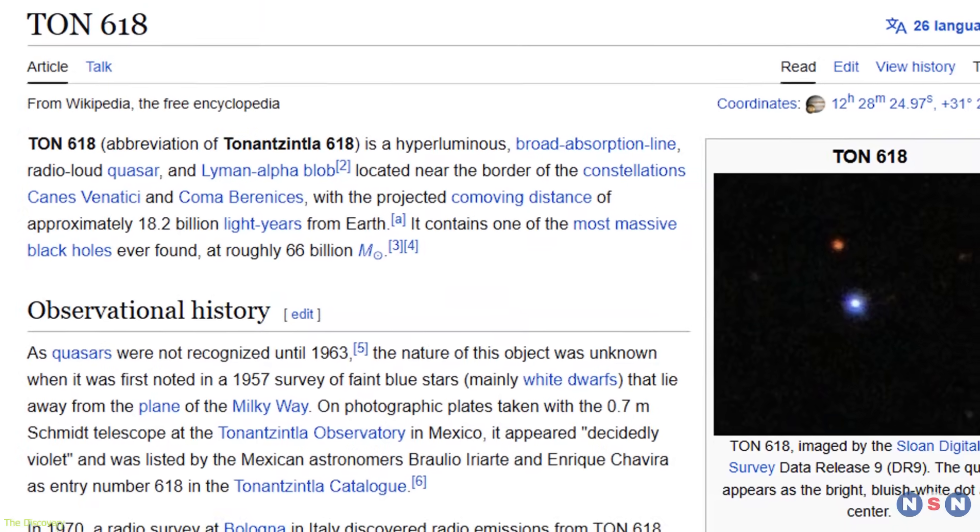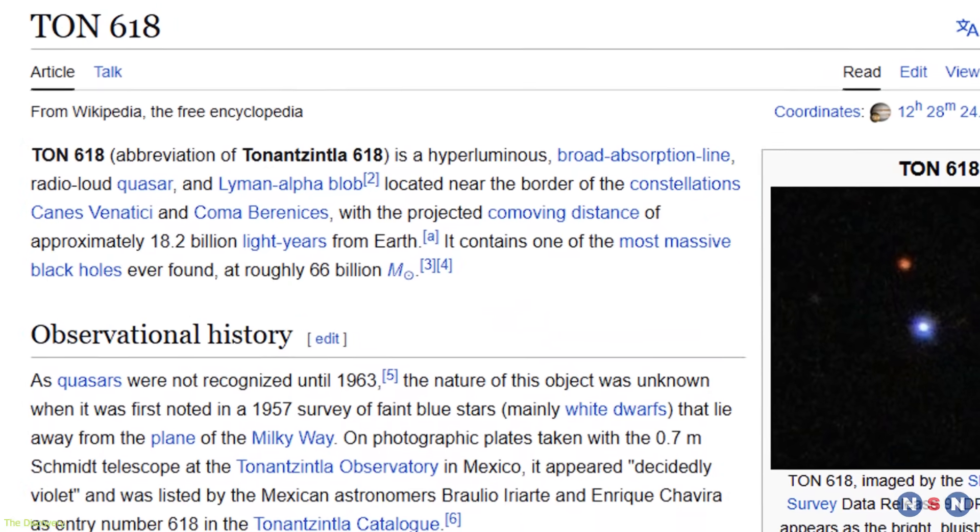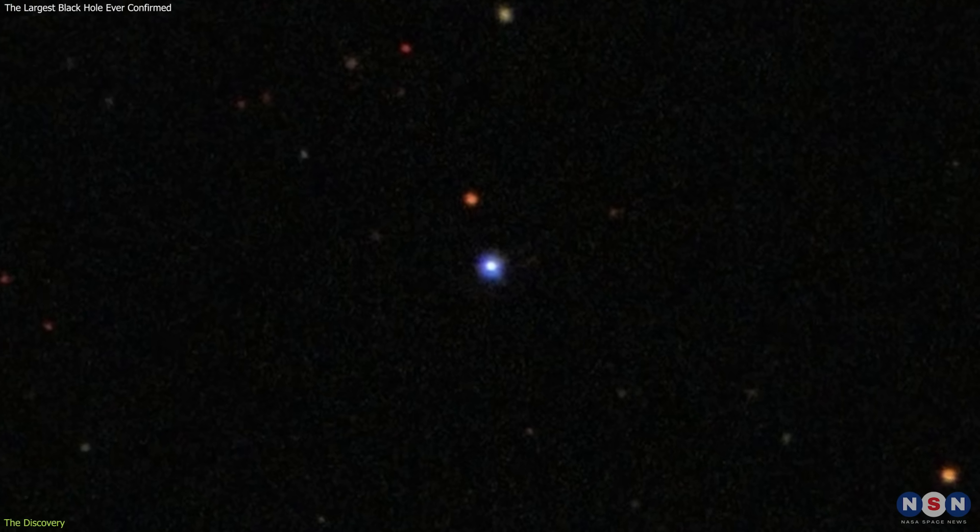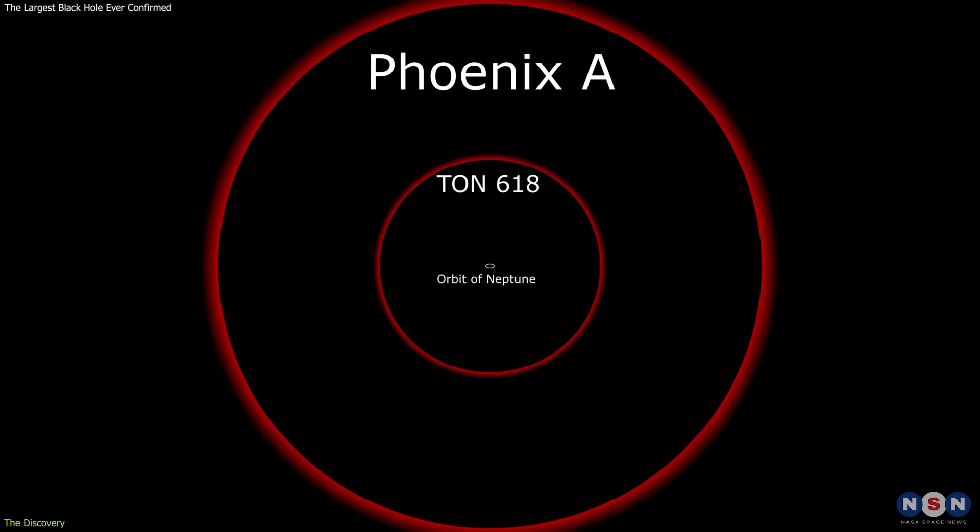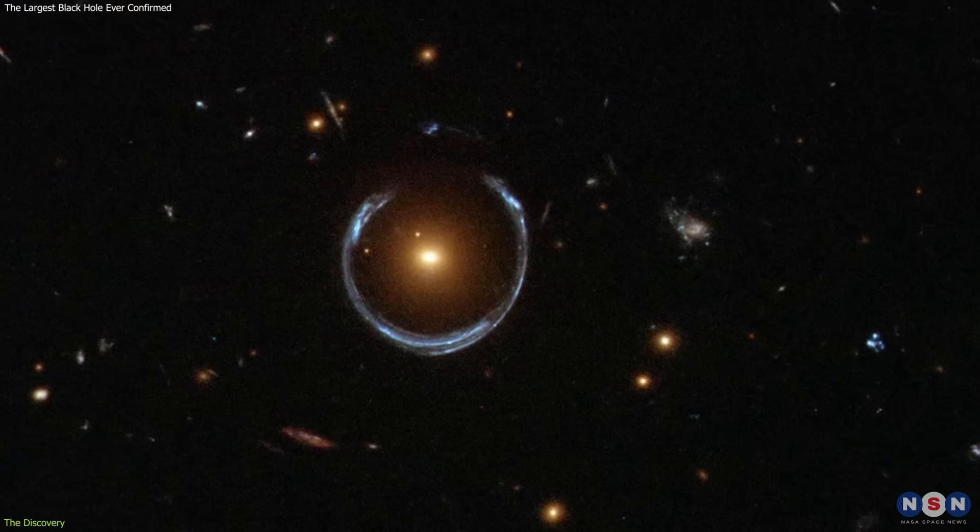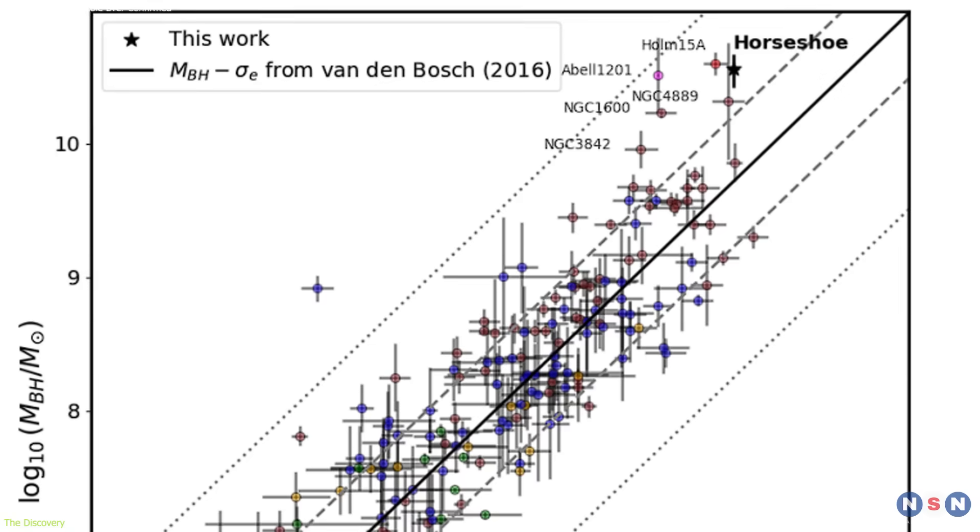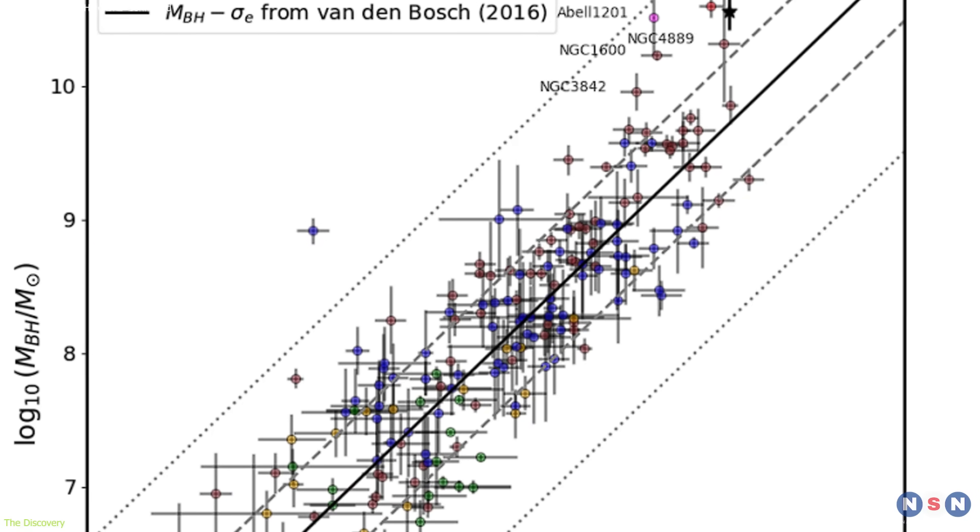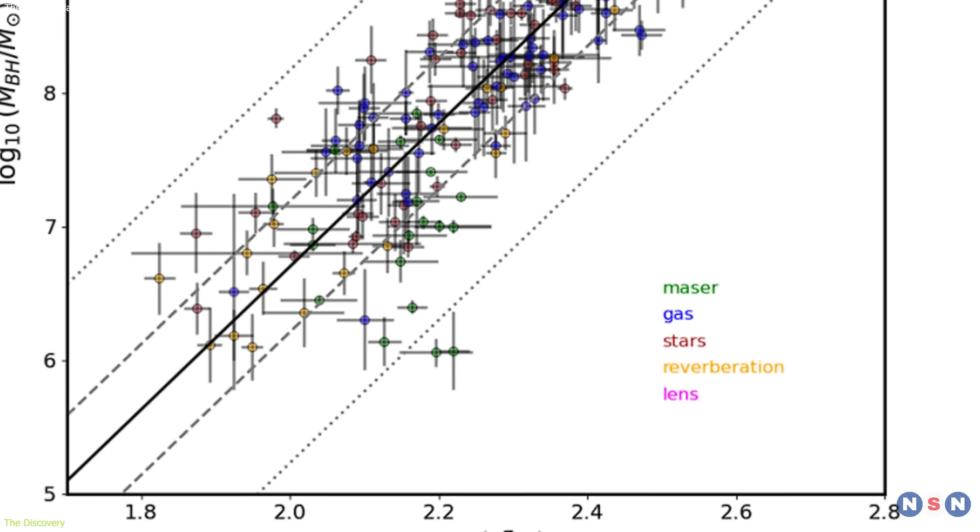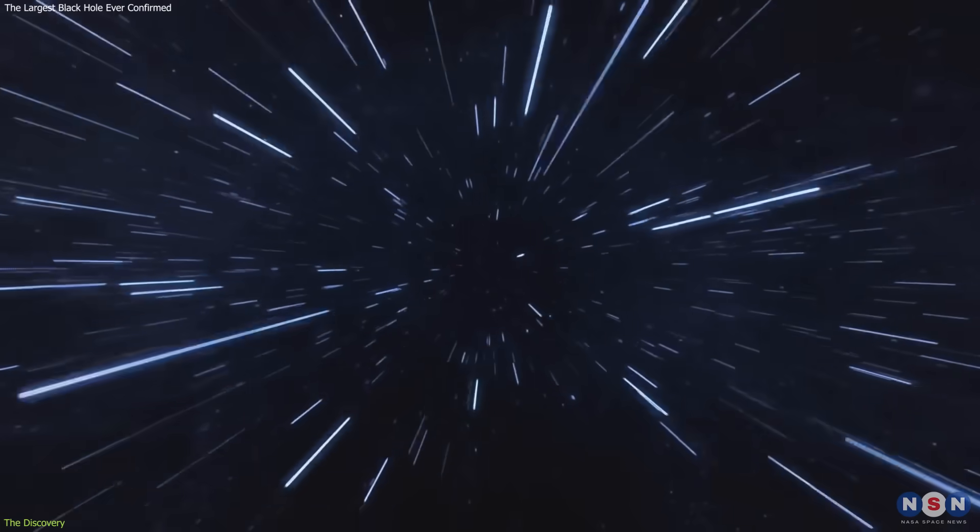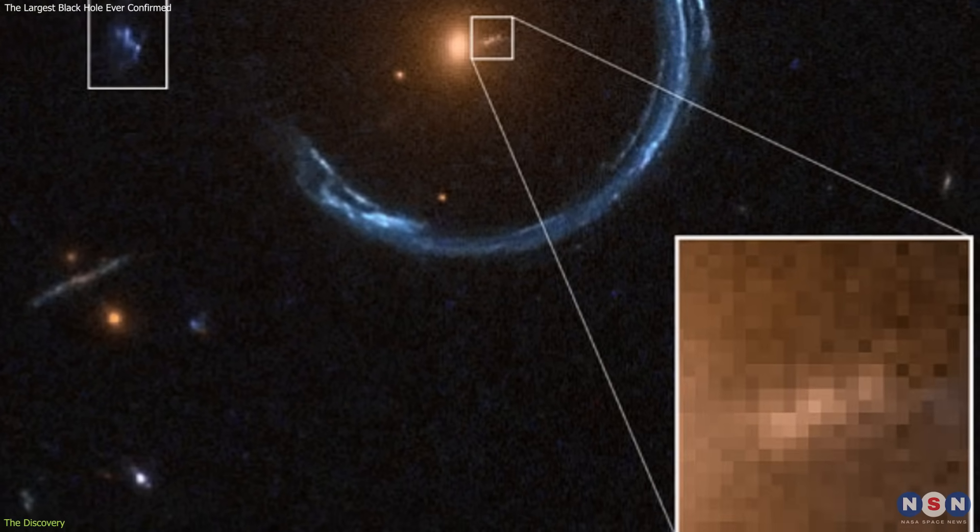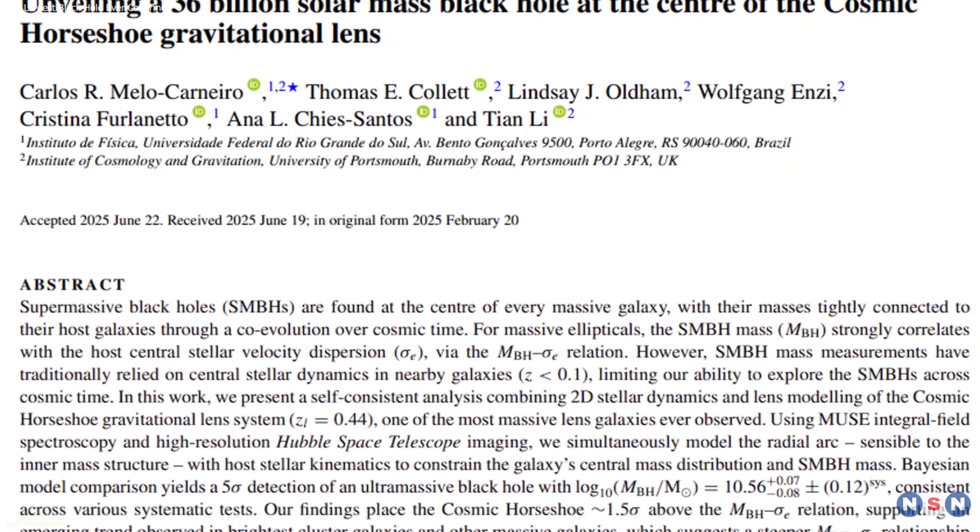Other candidates, like TON 618, have been suggested to be even bigger—possibly exceeding 60 billion solar masses. But those estimates rely on less direct methods with much larger uncertainties. Its result stands apart for its robustness. By testing their models against multiple scenarios and applying Bayesian comparisons, the team confirmed the outcome across different approaches. At 5 billion light-years away, this galaxy revealed one of the most distant confirmed black holes—an unexpected find from a dark matter study.